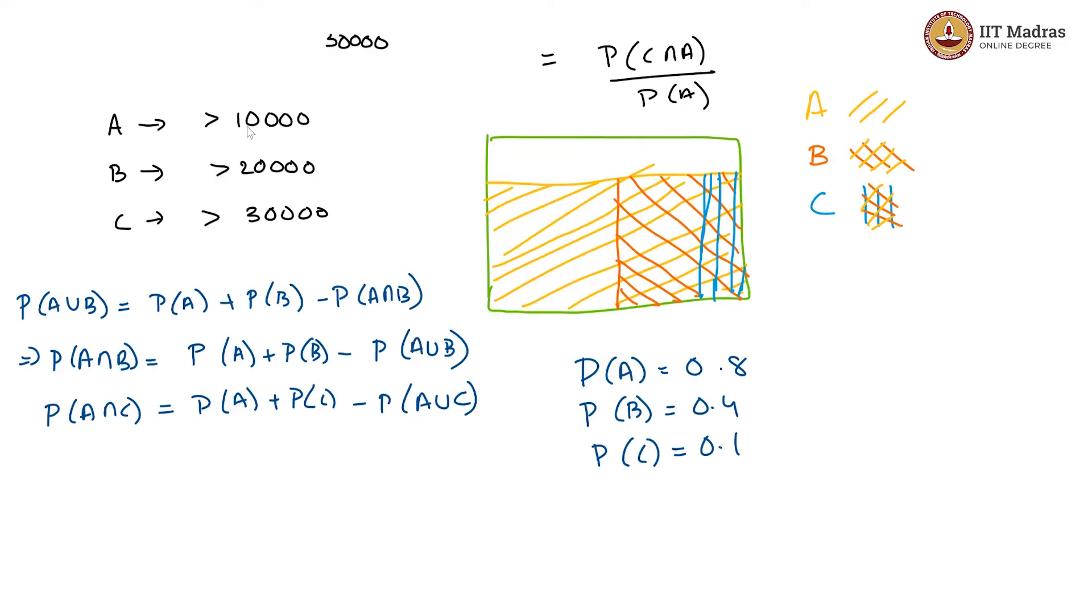Once we have this, what we have left to observe is P(A∪B), the probability of the union, is going to be just P(A) because B is fully embedded within A. The union is just A.